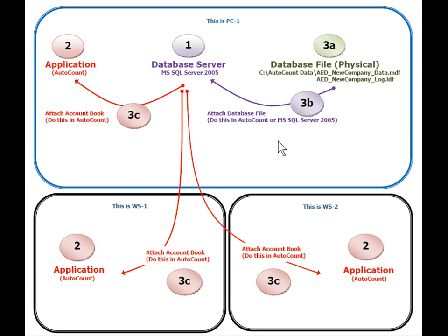In a networking environment, PC1 is the server and is installed with the database server. The server may or may not have the accounting software installed. The server has created an account book and the account book is attached to the database server. Workstation 1 installs the accounting software and attaches the account book from the database server. Similarly, Workstation 2 installs AutoCount accounting and attaches the account book from the database server. Whatever work they do is saved to the account book on the database server.